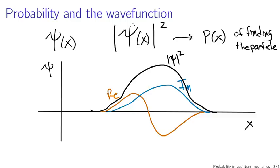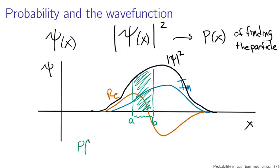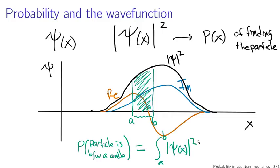Mathematically, suppose you had two positions A and B, and you wanted to know the probability of finding the particle between A and B. Given a probability distribution, you can find that by integrating. The probability that the particle is between A and B is given by the integral from A to B of the squared absolute magnitude of psi dx. You can think of this as a definition, or as an interpretation, but fundamentally this is the physical meaning of the wave function — it is related to the probability distribution of position associated with this particular state of the system.